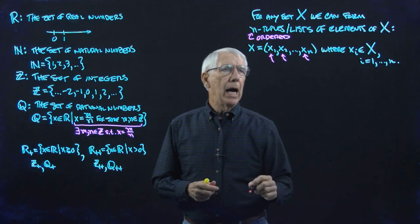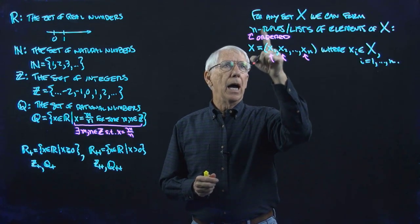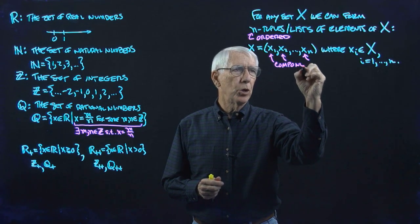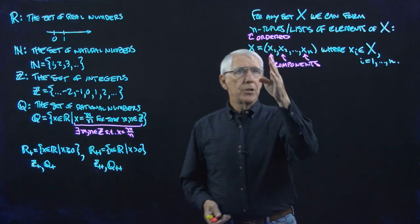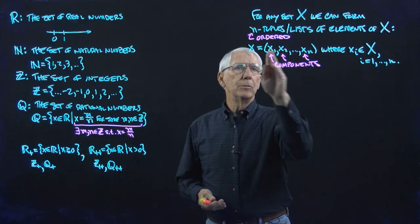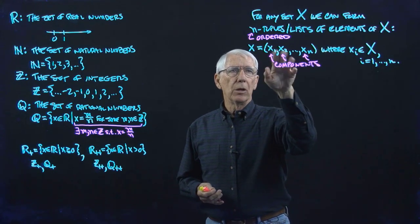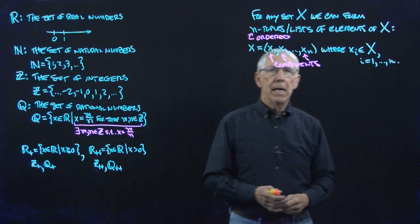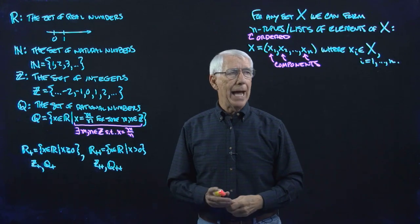The various components of the n-tuples are called components. That's the word we use to refer to the individual items in the list. These are the components of the n-tuple X.